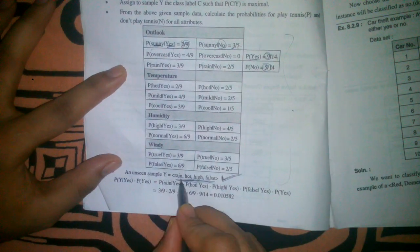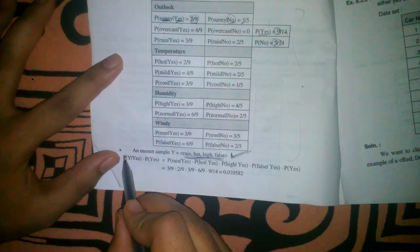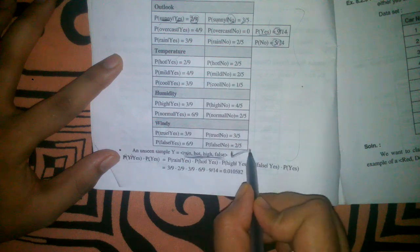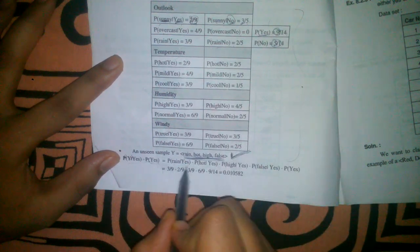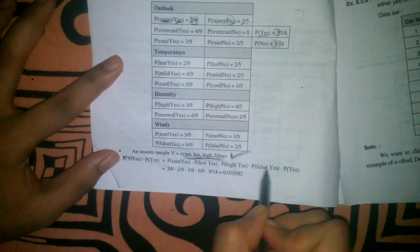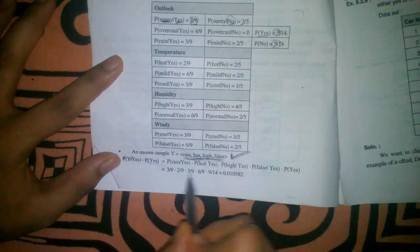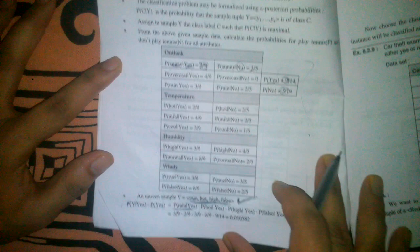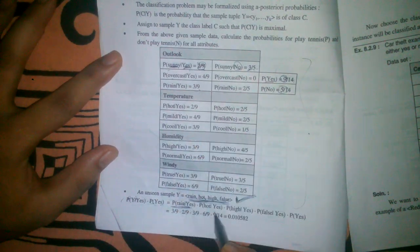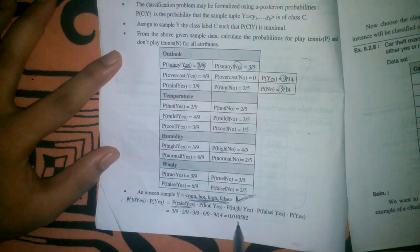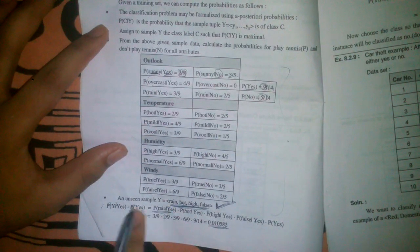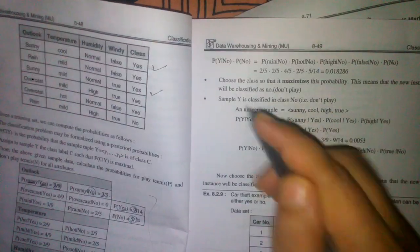To classify the unseen sample, we compute P(Y | yes) = P(rain | yes) × P(hot | yes) × P(high | yes) × P(false | yes) × P(yes), obtaining each factor from the table we built. For example, P(rain | yes) = 3/9. Similarly, we compute P(Y | no) using the corresponding no probabilities.